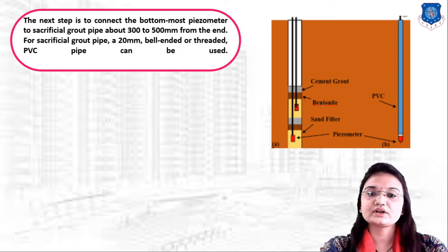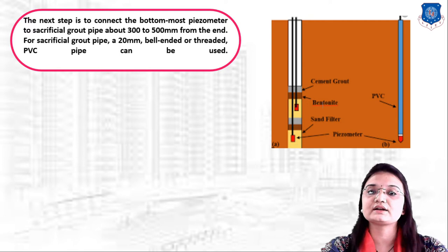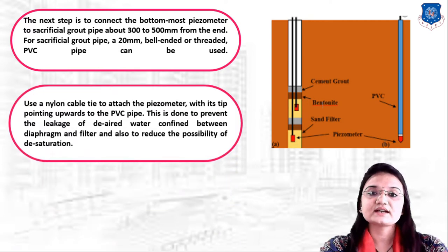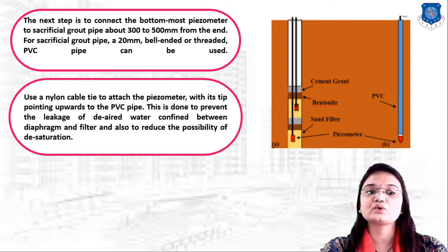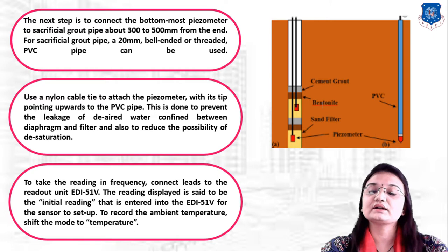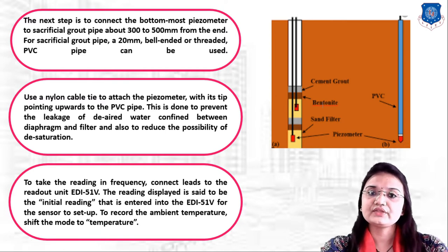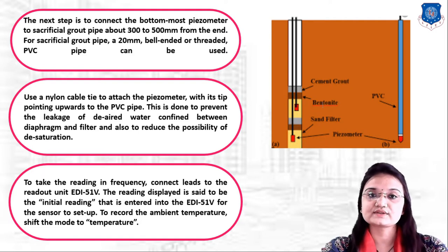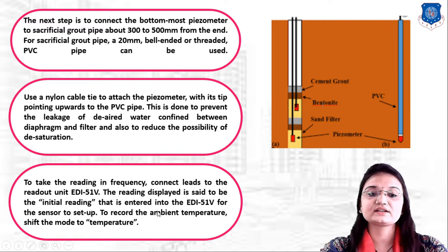Connect the bottom-most piezometer to a sacrificial grout pipe about 300 to 500 mm from the end. The sacrificial grout pipe is a 20 mm bell-end or threaded PVC pipe. Use a nylon cable tie to attach the piezometer with its tip pointing upward to the PVC pipe — this prevents air-water leakage between the diaphragm and filter and reduces desaturation. Connect the lead to the readout unit (EDI-51 volt) to take frequency readings, and enter the initial reading to set the sensor. Shift to temperature mode to record ambient temperature.